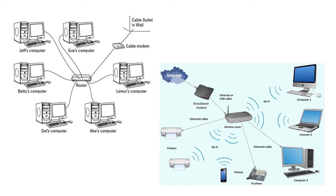There are two types of connections: wired and wireless. In a wired connection, all networking devices are connected through cables. In a wireless connection, no cable or wire is used to connect networking devices — instead, networking devices communicate with each other through signals.